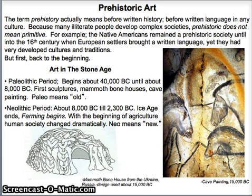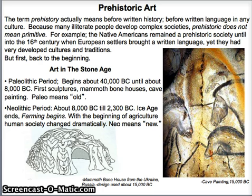With the Paleolithic period, we have the first sculptures, these really amazing mammoth bone houses — look at that little diagram, it's from mammoth bones — and we have cave painting. Then we have the Neolithic period. What does neo mean? It means new. So the Neolithic period is newer than the Paleolithic period. As the Ice Age is receding, farming begins. With the development of agriculture, people began to settle into villages to raise livestock, and this really changed how they made art — the crafts developed.